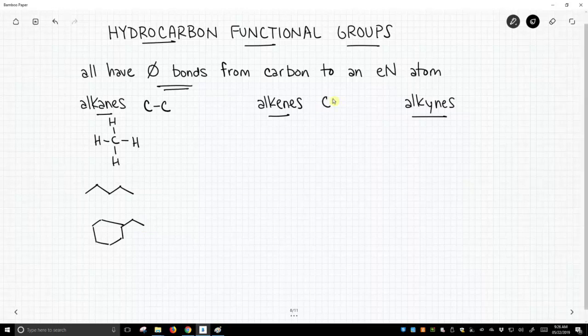So let's look at the alkenes. The alkenes have a carbon-carbon double bond, a sigma and a pi bond. The simplest alkene is this molecule, but of course, our alkenes can get bigger.